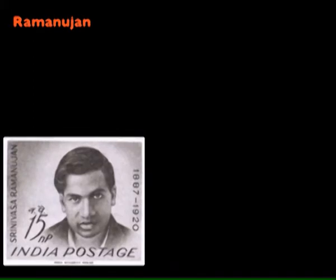This is Ramanujan, an Indian mathematician who was extremely poor — he didn't even have enough money for paper most of the time, so he wrote his proofs without writing the workings out. He died at the age of 33. After he died, mathematicians set to try and work out what he was doing, and opened up entire new fields of maths. His mathematics are used in string theory today.